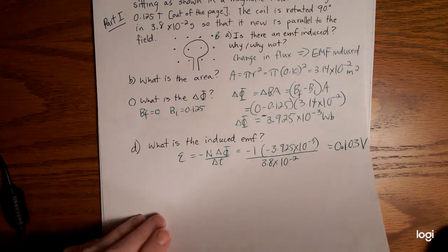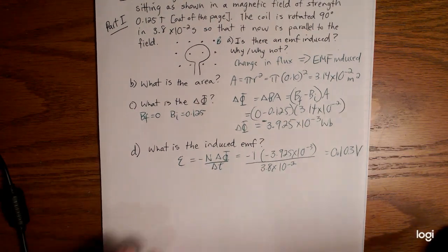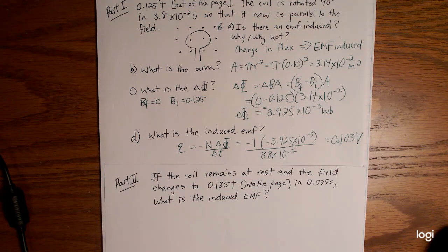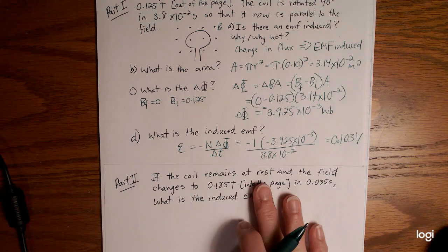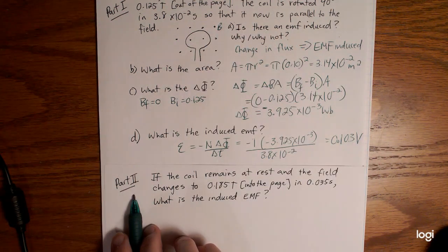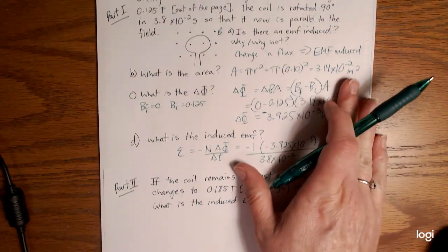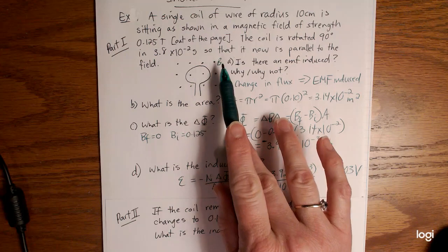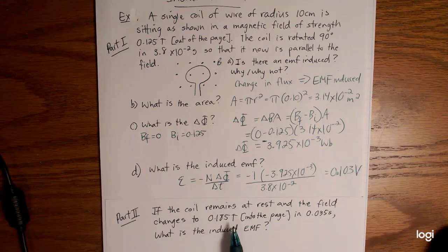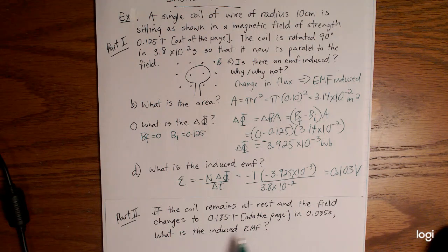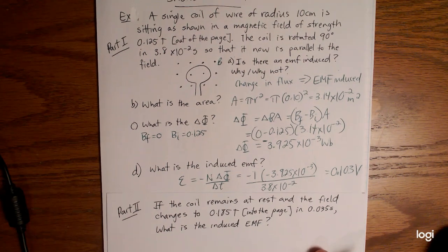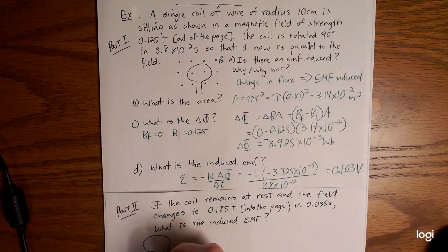Now what if, instead of us rotating, what if the coil remains at rest and the field changes? So now I'm not going to rotate the field. I'm going to leave the field alone. I'm going to start with the same exact example. I'm calling this part two. So we have the single coil at rest in the magnetic field and now I'm going to change the field. If the coil remains at rest and the field changes to 0.185 tesla into the page, what is the induced EMF?